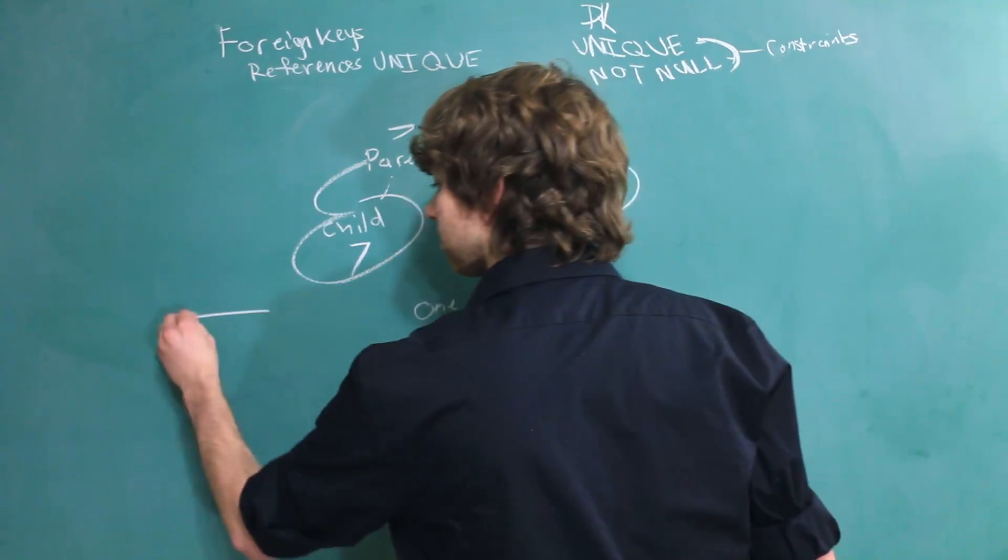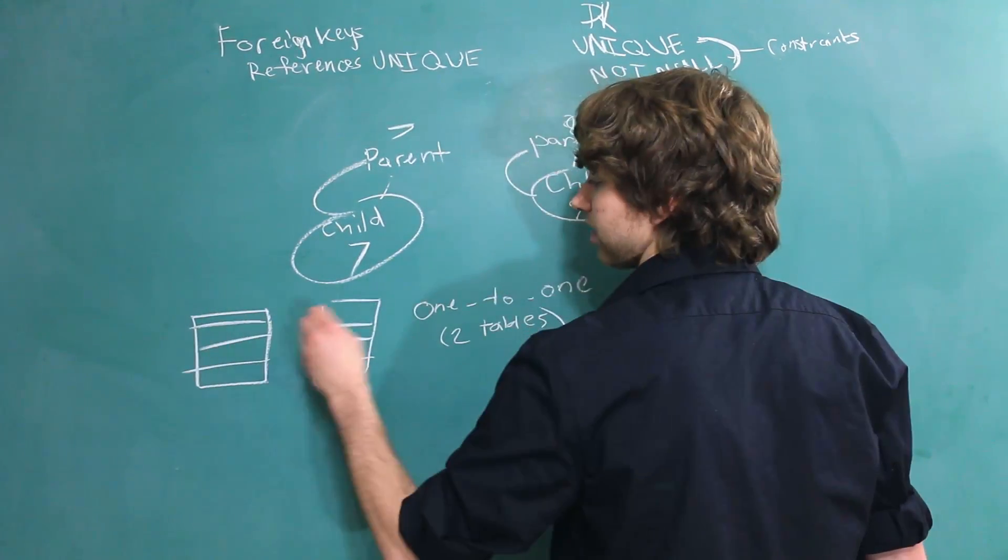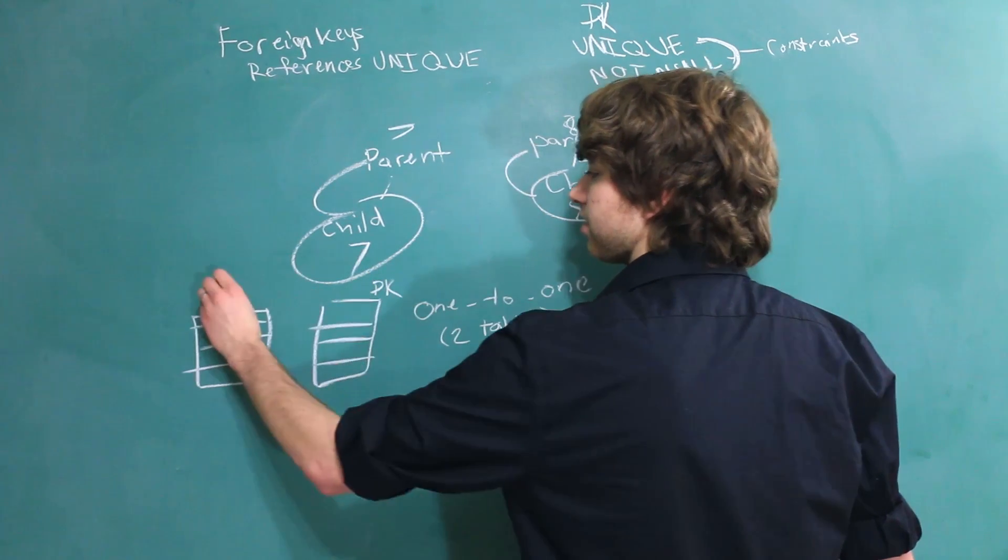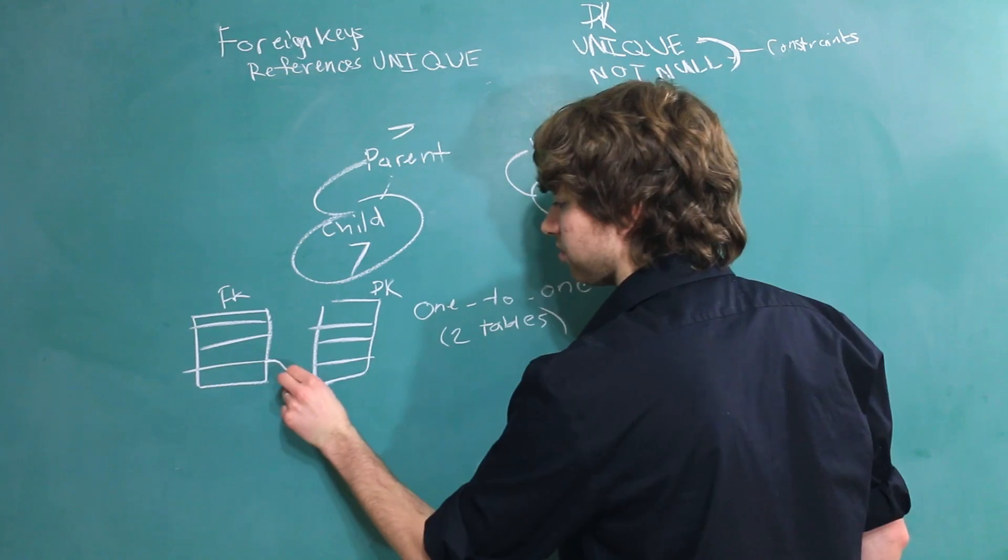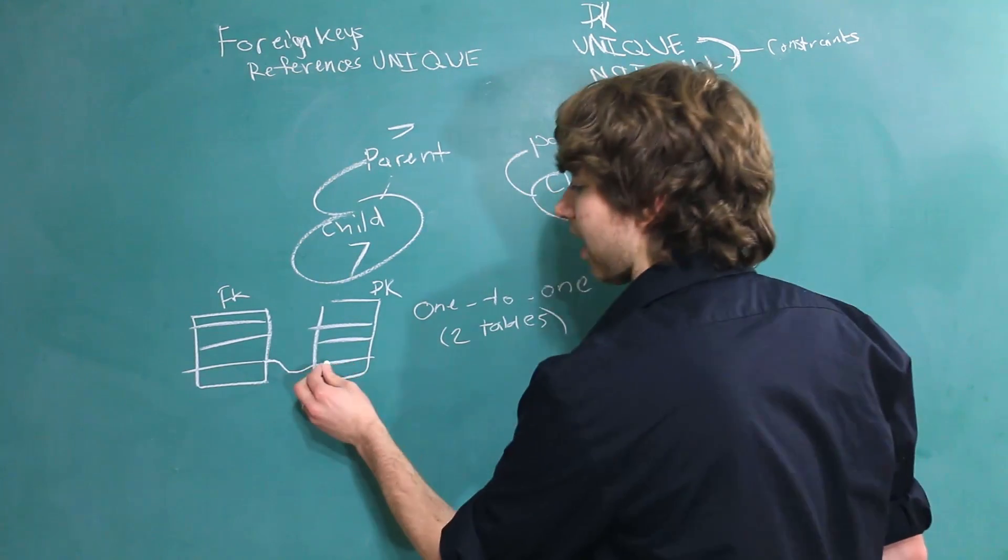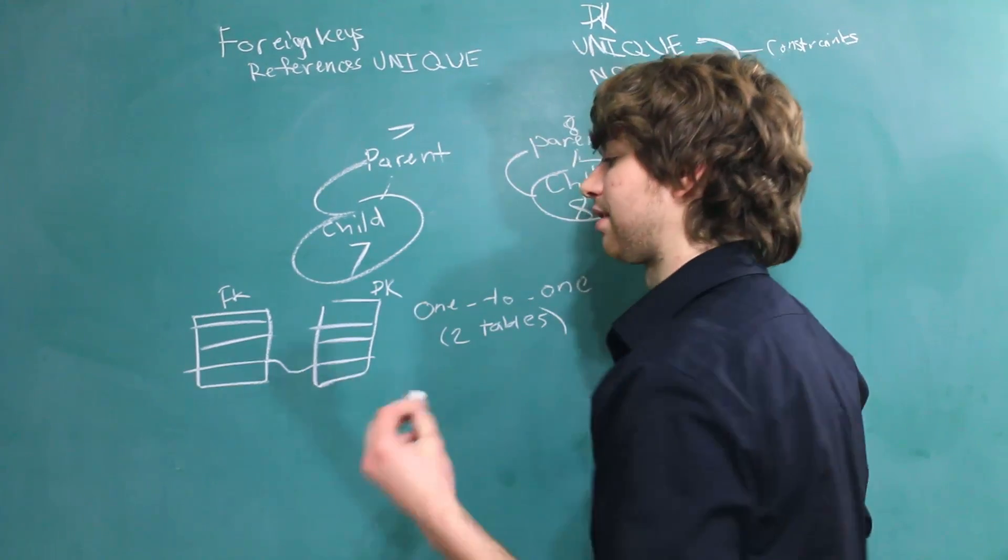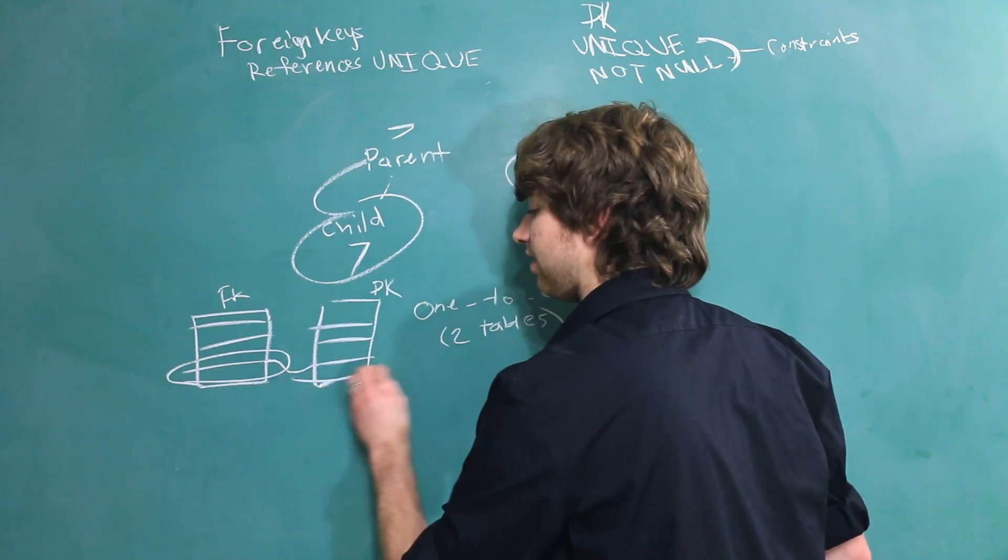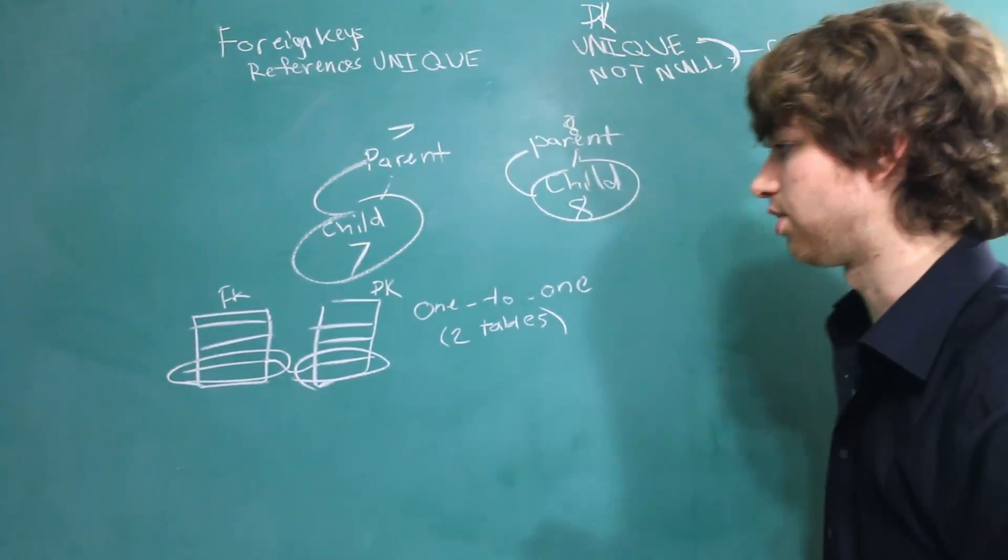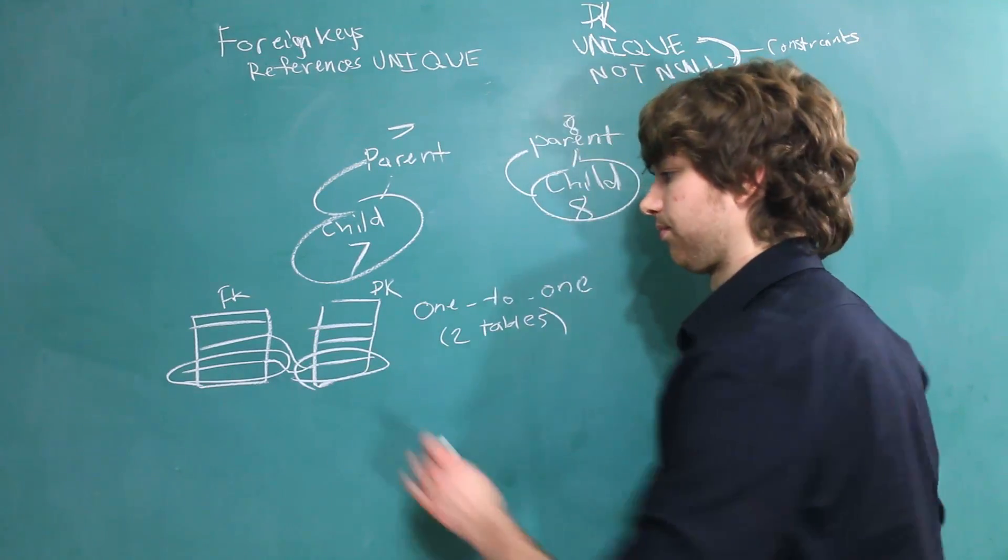So, if we have two tables, and we'll draw each row as a line, just for simplicity. And let's say this is the primary key, and this is the foreign key. One row can reference one parent, but that parent cannot be referenced by another column. That's not allowed. That means there's exclusivity between this child and this parent. That's the only association. We can't have it like this, or anything like that.